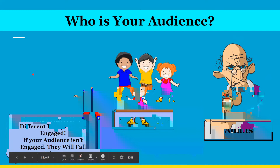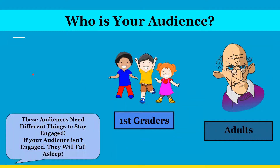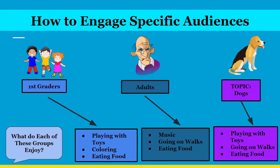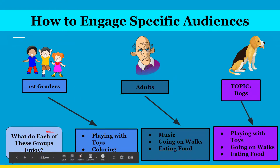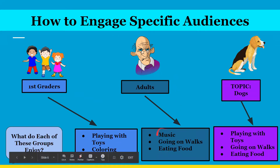These audiences need different things to stay engaged. If your audience isn't engaged, they will end up falling asleep and being bored. So here's how we're going to engage them. We need to figure out what each of these groups enjoy. First graders enjoy playing with toys, coloring, and eating food, while adults like listening to music, going on walks, and eating food.